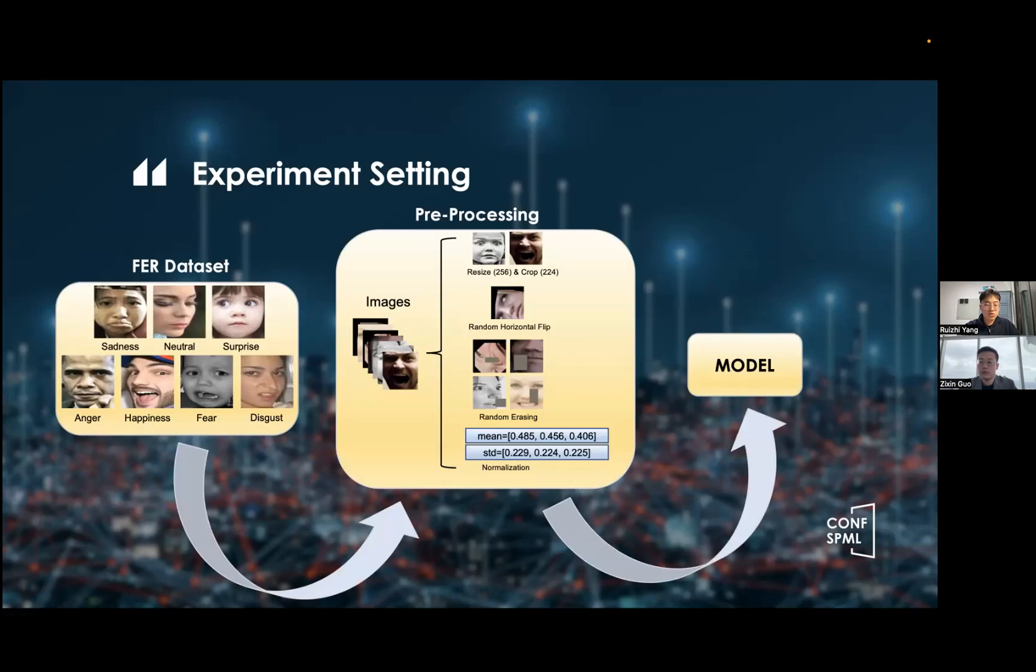Here, we come to the experiment setting section. As this figure shows, we use open-sourced online FER data sets. In this study, we employ the CKplus RAFDB to train our model and use slab A to pre-train our ECA backbone network. And then we need to pre-process the image before feeding them into the model.